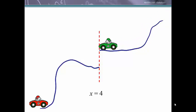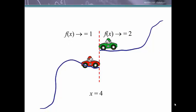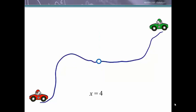Here's another example if we wanted to approach 4. As we approach from the right hand side, we approach a function value of 2. Yet if we approach from the left hand side, we approach a function value of 1. Since as we get close to 4, we get different function values from either side — they do not agree with each other — we say the limit of this function as x approaches 4 does not exist.